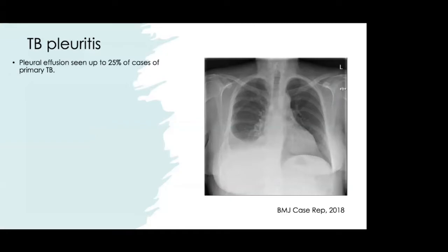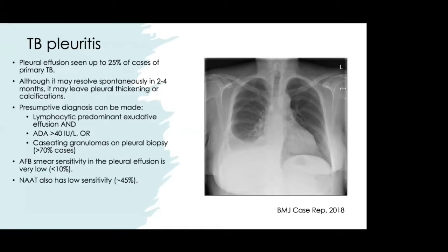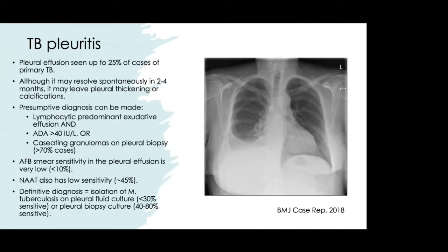Pleural effusions occur in up to 25% of primary TB cases and may resolve spontaneously but leave pleural thickening or calcifications. A presumptive diagnosis can be made with a lymphocytic exudative effusion on thoracentesis, plus an ADA in pleural fluid greater than 40, or caseating granulomas on pleural biopsy. AFB smear and NAT have low sensitivity in pleural fluid (~50%), while definitive diagnosis requires isolating TB on pleural fluid culture or biopsy.